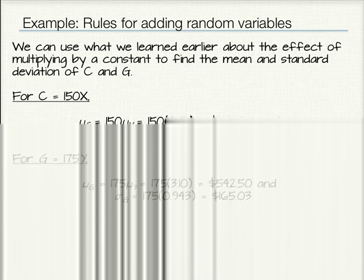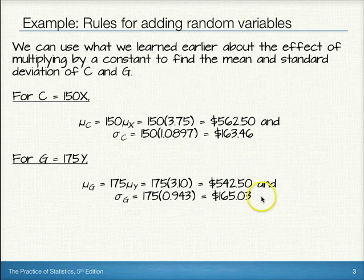Following the same idea for G, we can find the mean of $542.50 and a standard deviation of $165.03.